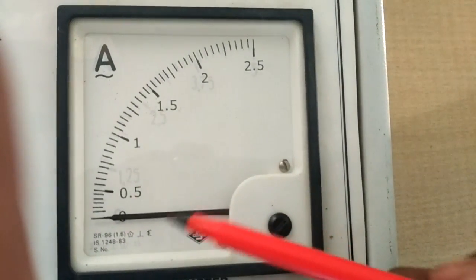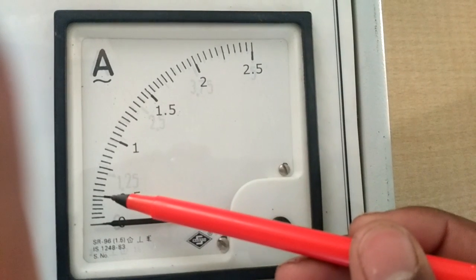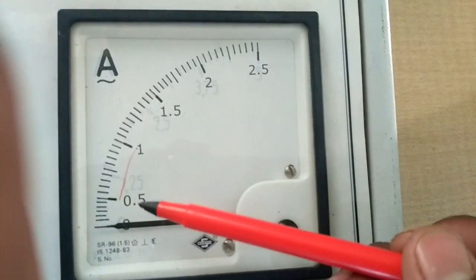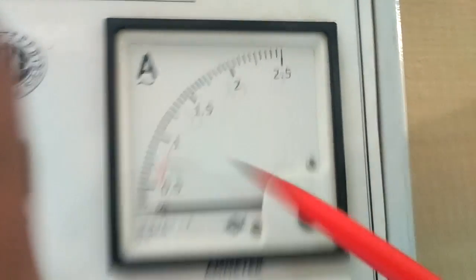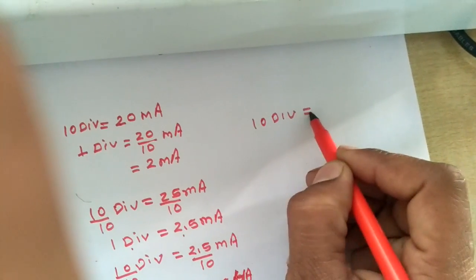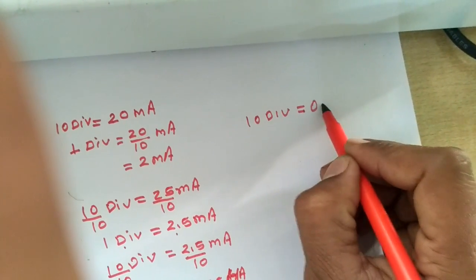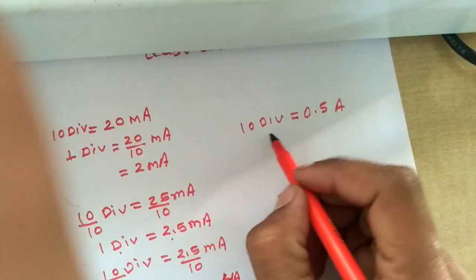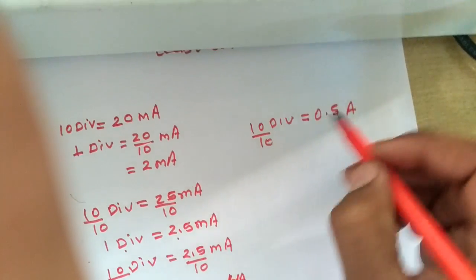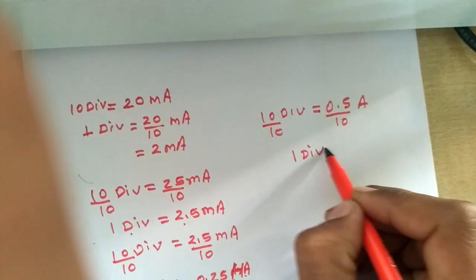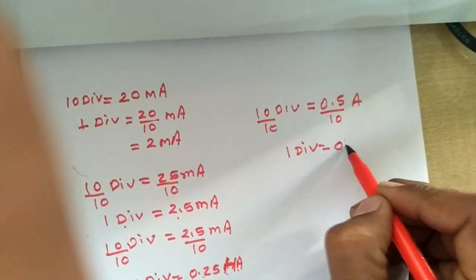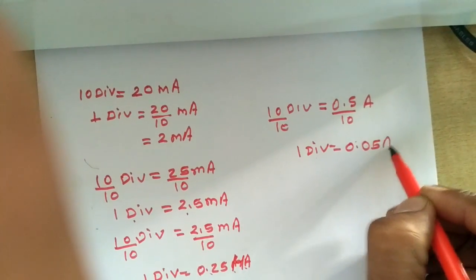I have one more ammeter. You can see that this 10-division range is actually denoting 0.5 ampere, so 10 divisions equals 0.5 ampere. Divide this value by 10: one division's value is 0.05 ampere. This is the least count of this ammeter.